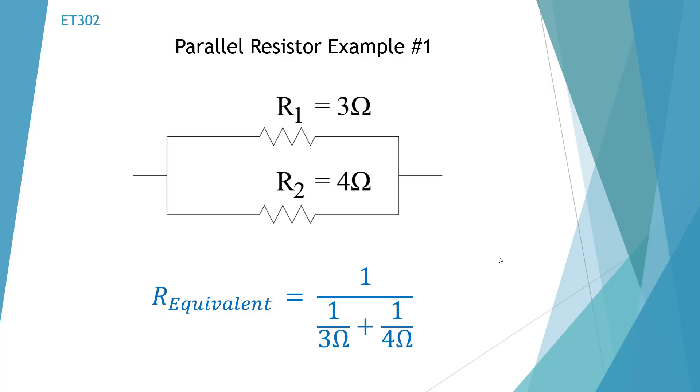Here's our first example of parallel resistors. We have a 3 ohm and a 4 ohm and you notice they're in parallel and I put the numbers into our formula.